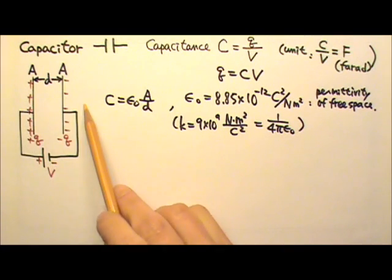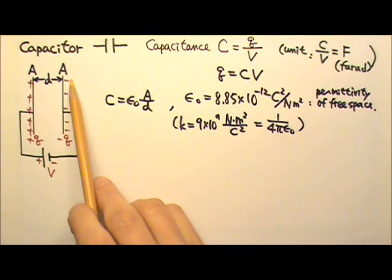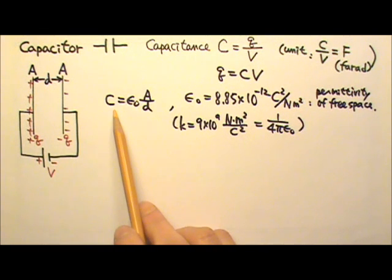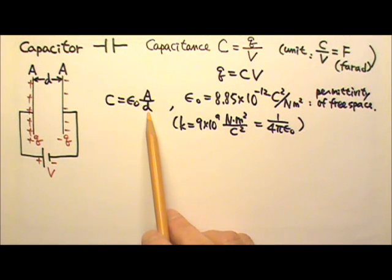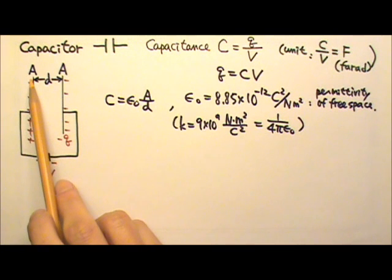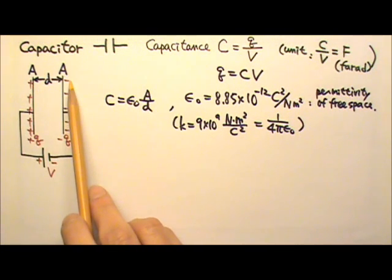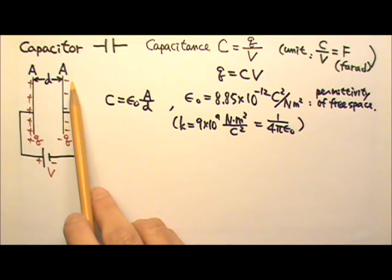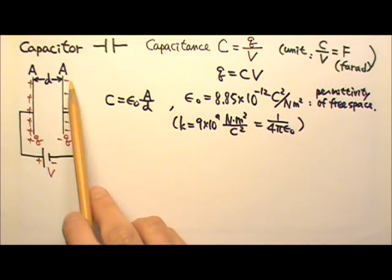For a parallel plate capacitor with plate area A and the plate separation d, the capacitance is C equals epsilon naught A over d. By the way, the plate area being A means each plate has an area A, and we do not add these two areas together to get 2A. We just use A for the plate area.